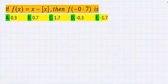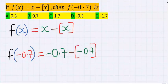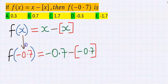Consider this question: if f(x) is equal to x minus [x] (the greatest integer function), then what is f(-0.7)? The first step here is in place of x you are going to have minus 0.7.